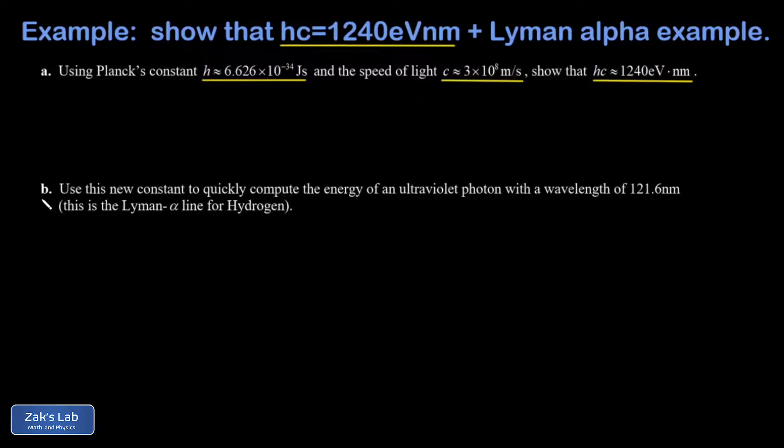In part B, we show why it's so useful to have this constant memorized. It makes a lot of the calculations we do in atomic physics very quick. So I'll start by looking at the product of Planck's constant and the speed of light, just in the SI units.